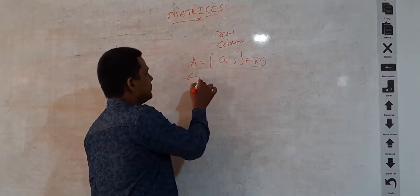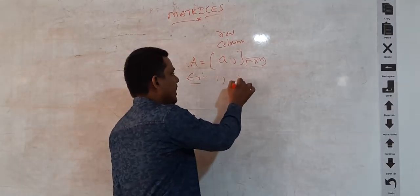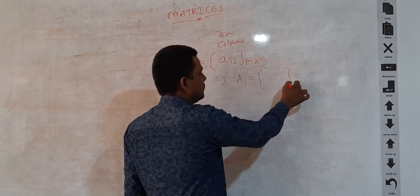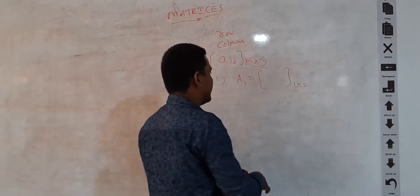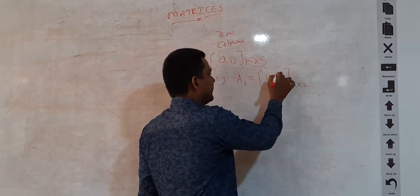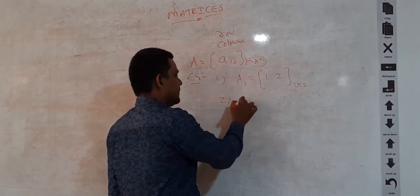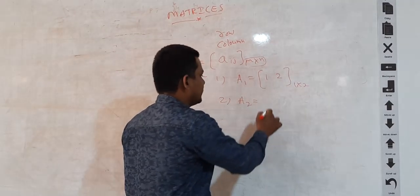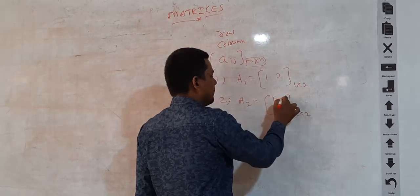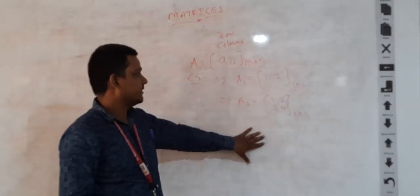Examples of matrices: A1 is a matrix of order 1 by 2, consisting of 1 row and 2 columns, with elements 1, 2. Similarly, A2 is a matrix of order 2 by 2, with elements 1, 2, 3, 4. In this manner we can define so many matrices. This is the basic definition.